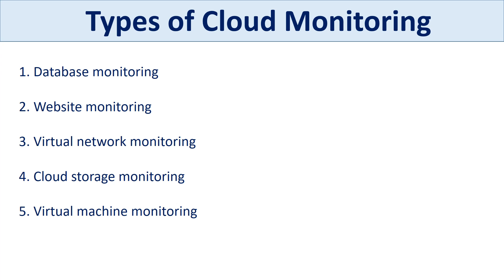There are several types of cloud monitoring. Database monitoring reviews processes, queries, availability, and consumption of cloud database resources. Website monitoring tracks processes, traffic, availability, and resource utilization of cloud-hosted sites. Virtual network monitoring creates software versions of network technology such as firewalls, routers, and load balancers. Cloud storage monitoring tracks multiple analytics simultaneously, monitoring storage resources and processes provisioned to virtual machines, services, databases, and applications. Finally, virtual machine monitoring simulates a computer within a computer — that is, virtualization infrastructure and virtual machines.